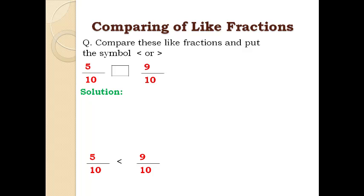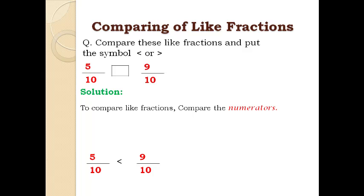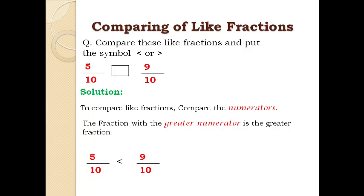To compare like fractions, compare the numerators. The fraction with the greater numerator is the greater fraction. For example, comparing 5 over 10 with 9 over 10: since numerator 9 is greater than 5, we have 5 over 10 is less than 9 over 10.